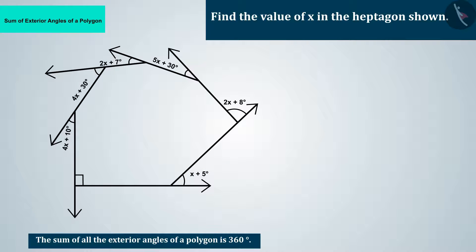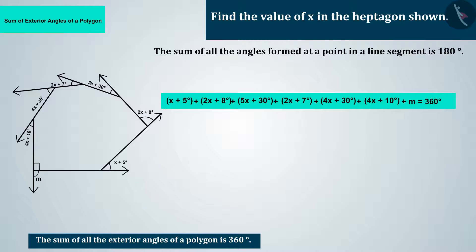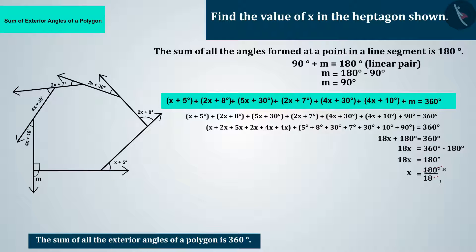We can see the measurement of only 6 external angles of the heptagon. Let us name the 7th external angle M. The measure of the adjacent interior angle is 90 degrees, and since the sum of all angles at a point on a line is 180 degrees, the value of M is 90 degrees. Substituting M into the equation and solving gives x = 10 degrees.